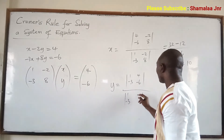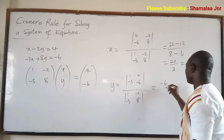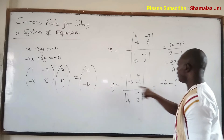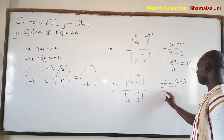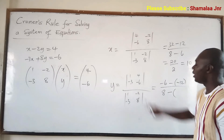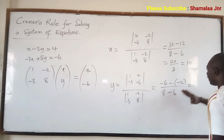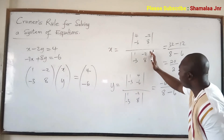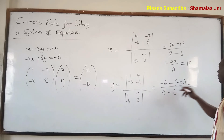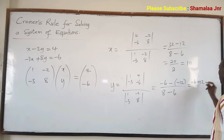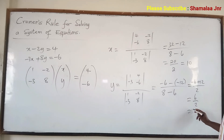So for y, the numerator matrix is 1, 4, negative 3, negative 6. The determinant is: negative 6 times 1 is negative 6, minus negative 3 times 4, which is negative 12. So that becomes negative 6 minus negative 12, equals negative 6 plus 12, which is 6. All over 2. So y equals 6 over 2, which equals 3.